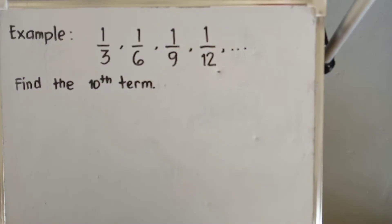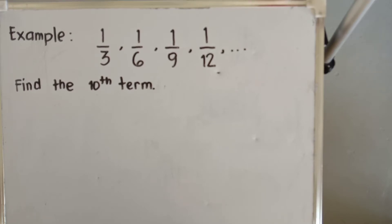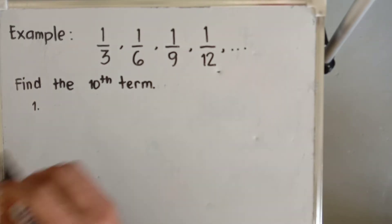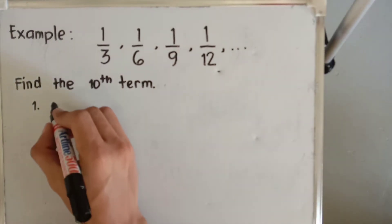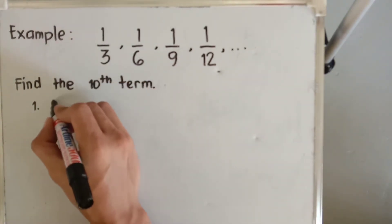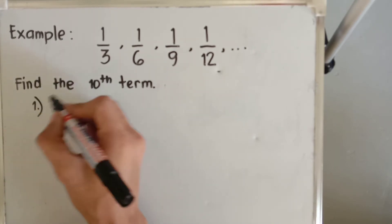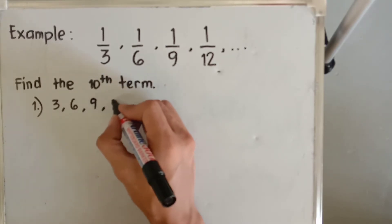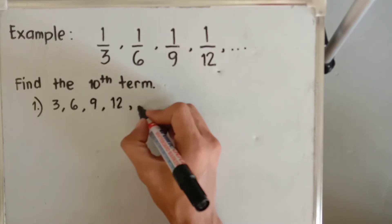Let's proceed to the second example. Given that one-third, one-sixth, one-ninth, and one over twelve, and so on is a harmonic sequence, let's try to find the tenth term. From the previous example, we already identified the reciprocated terms: the reciprocal of one-third is three, one-sixth is six, one-ninth is nine, and one over twelve is twelve, and so on.